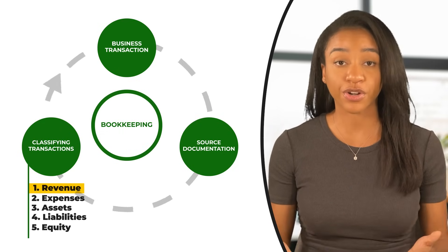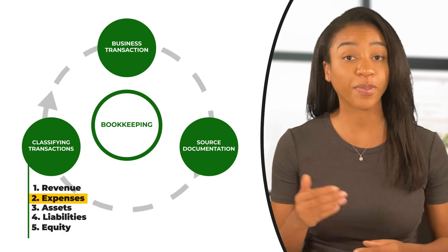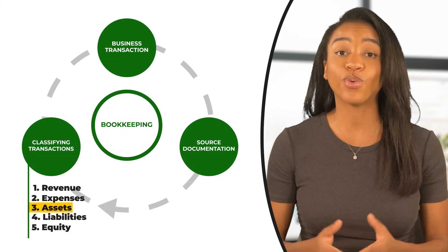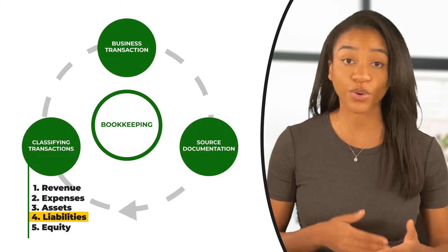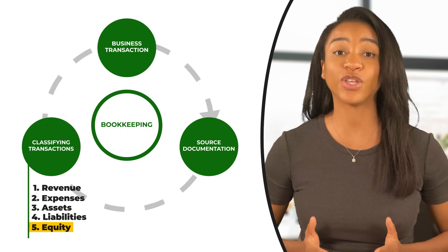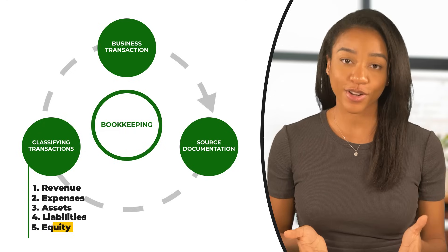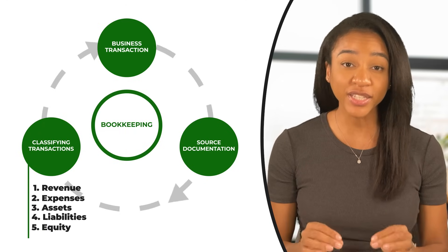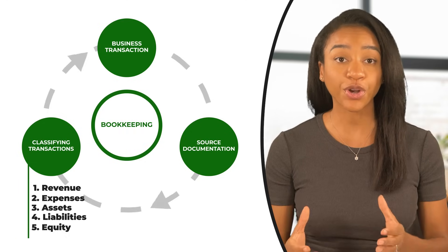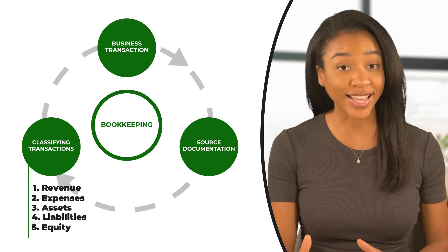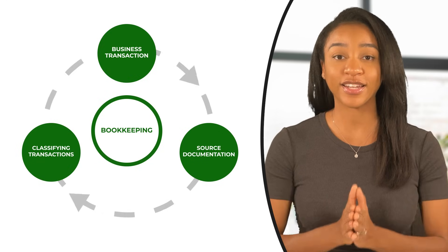Revenue is what you earn, like your sales. Expenses are what you pay out, like advertising or payroll. Assets are what you own, like your inventory. Liabilities are what you owe, like loans or credit cards. And equity is what you have invested in your business, like contributions you make to your business. This part of the bookkeeping cycle is especially important because how you classify your financial transactions will determine how your financial statements are presented and interpreted by you.